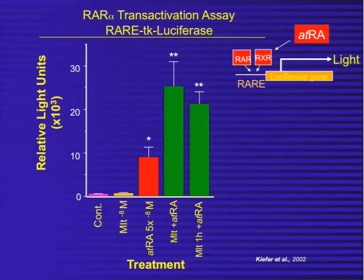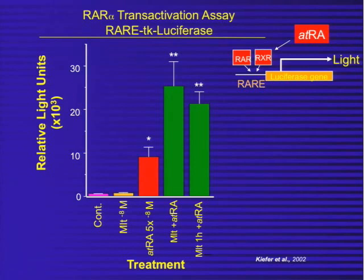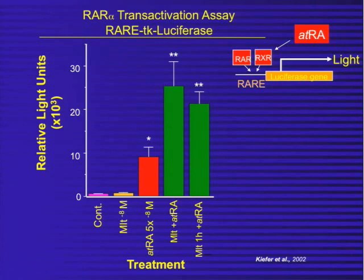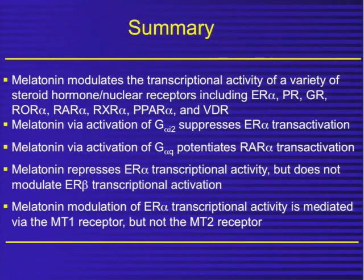In another study, we looked at the retinoic acid receptor — vitamin A receptors. You can add retinoids or vitamin A and stimulate the activity of this receptor using a reporter construct in MCF7 human breast cancer cells. But this time, instead of inhibiting the activity of the receptor, when we pre-treated the cells with melatonin, we potentiated the action of the receptor. RAR alpha, when added to human breast cancer cells, causes them to differentiate and undergo apoptosis. We've shown clearly that we can inhibit the growth of breast cancer cells using a combination of melatonin and retinoic acid.